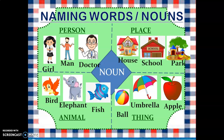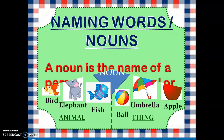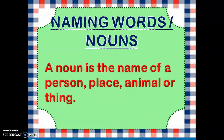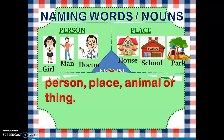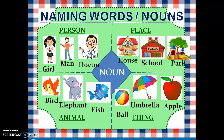So like this we have categorized these things into person, place, animal, and thing. A noun is the name of a person, place, animal, or thing. All these objects — girl, man, doctor, house, school, park, bird, elephant, fish, ball, umbrella, and apple — all these are nouns.